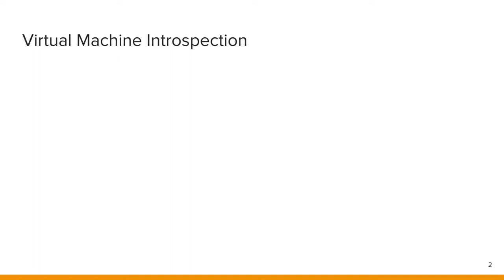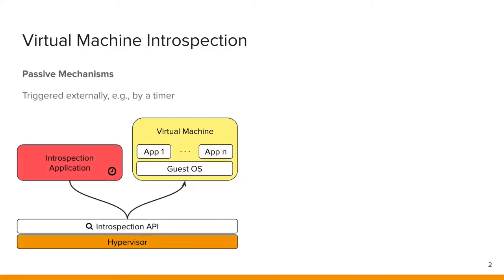To begin with, let's look at the two distinct approaches of VMI based on control flow. On the one hand, we have passive mechanisms which are triggered externally, for example by a timer in an introspection application. These mechanisms are based on main memory forensics.